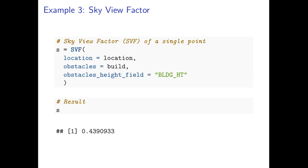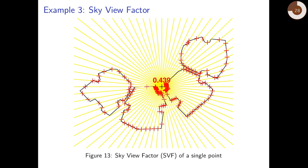Here we are using function SVF again with similar inputs: the queried location is the same buildings layer centroid, the obstacles are the buildings, and the name of the height field is building_height. The result is a numeric value of 0.44.